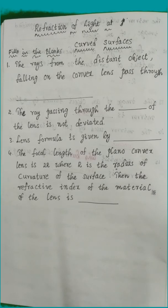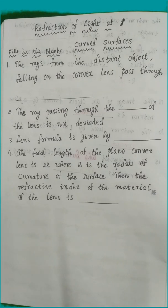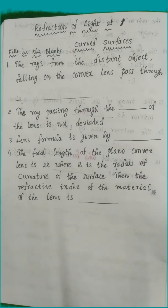Welcome, dear students. Today our topic is refraction of light at curved surfaces. Curved surfaces means, for example, a convex lens or a concave lens. For any lens, at least one surface should be a curved surface.